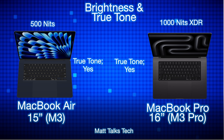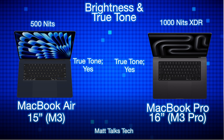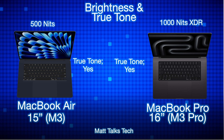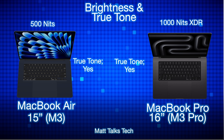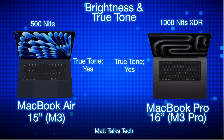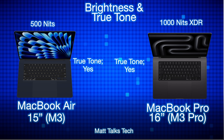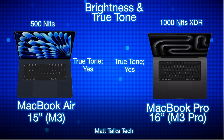Both machines have True Tone technology. For brightness, the MacBook Air maxes out at 500 nits, while the MacBook Pro 16-inch can reach 1000 nits in XDR mode and up to 1600 nits for HDR content — great for professional video editing. For standard use, the MacBook Pro is just a bit ahead.